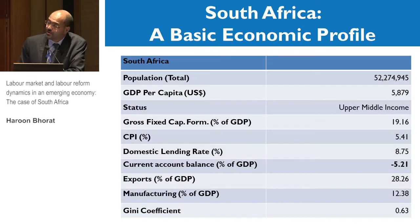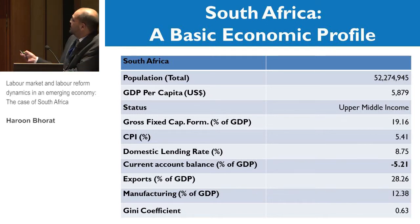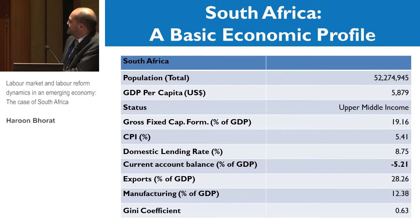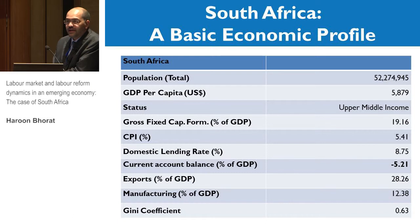We have a population size approximately the same as South Korea. We're an upper-middle-income country. You've got a current account deficit which explains much of our short-term cyclical movements and our growth path dependence. A very common theme in South Africa is a very low share of manufacturing as a percentage of GDP. And then the outlier statistic is the Gini coefficient — essentially a middle-income country with high levels of income inequality and a fairly undynamic manufacturing sector.